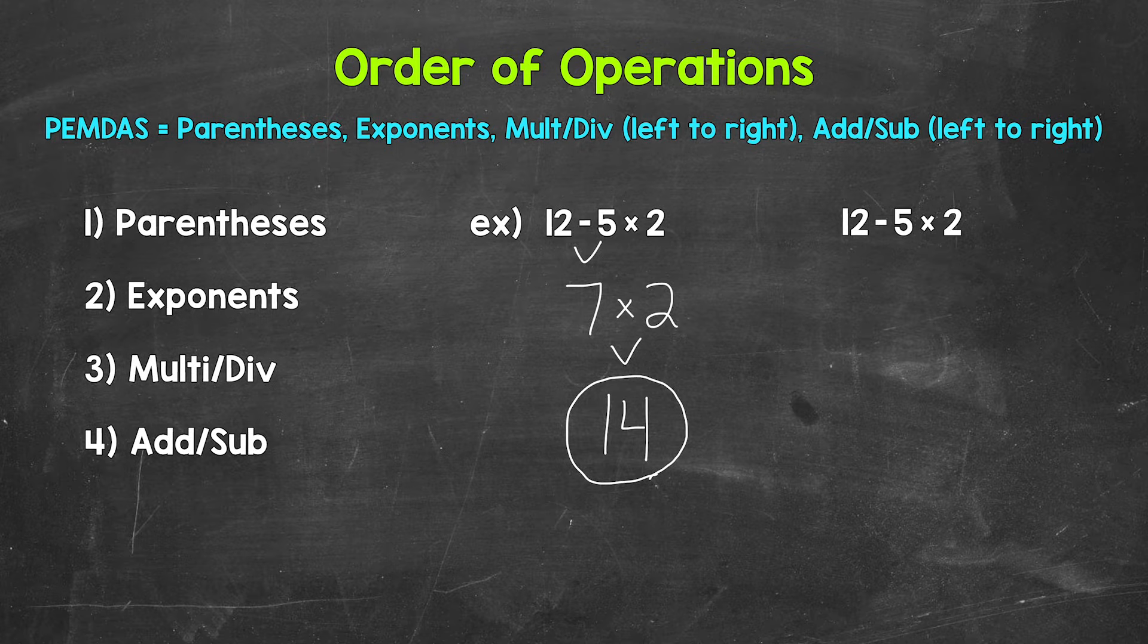So our final answer when we work from left to right is 14. Now let's do 12 minus 5 times 2 another way. We're going to start by doing multiplication first. So let's say this person starts with multiplication, which would be 5 times 2. So let's start there.